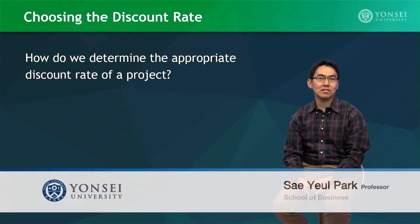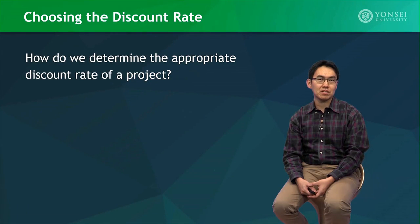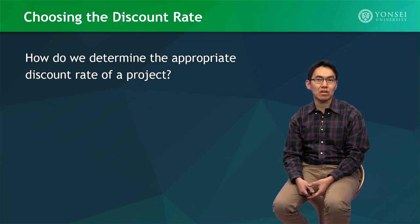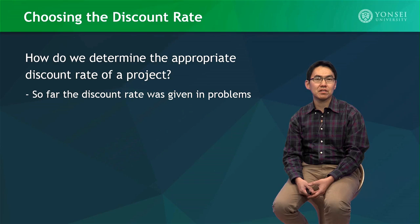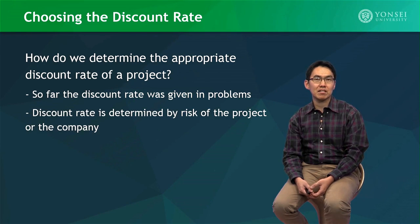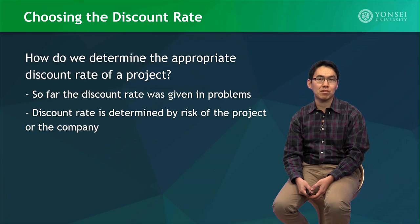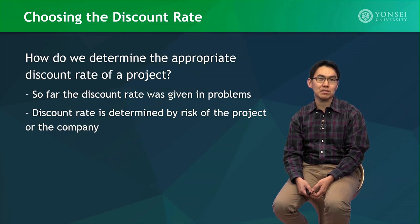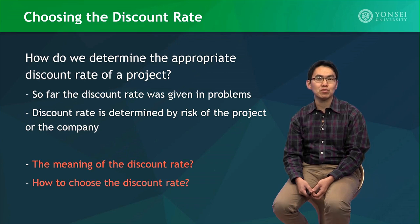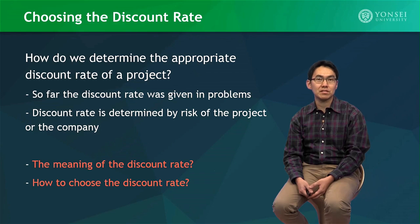Hi, so here we are in the last video of this module. Today's lecture is about the discount rate. Haven't you had the following question in your mind? How do we determine the appropriate discount rate of a project? So far, the discount rate has always been given in problems, and we just understand that it is determined by the risk of the project or the company, although we do not know how exactly to estimate it. So what does the discount rate mean exactly, and how should we choose the discount rate of a project? These are the last topics of the module, so let's get started.